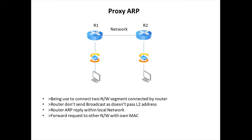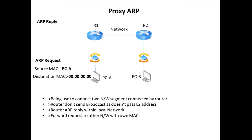The router also forwards its own MAC address to the other network during communication. Here we have a PC, Computer A, and Computer B. In the ARP request, the source MAC is Computer A and the destination MAC is blank (00). The router will reply back with an ARP reply, where the source MAC is Router 1's MAC and the destination is Computer A's MAC. This is how Proxy ARP works.